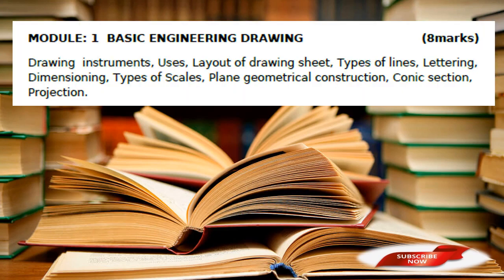This is basic engineering drawing. It is distributed to 8 marks. If you are interested in the exam — 3rd grade, 1st grade — this is the syllabus and you can add a mark. Topics include: drawing sheet layout, types of lines, lettering, dimensioning, types of scale, plain geometrical construction, conic section, and projection. This is an engineering drawing syllabus.